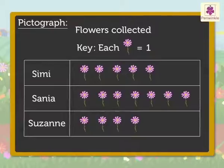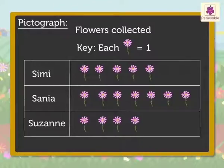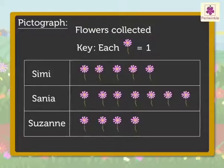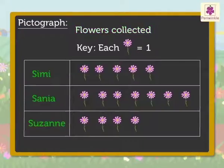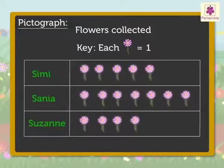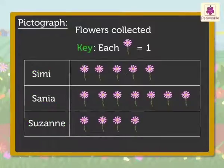Now, let's see how we can read this PICTOGRAPH of the flower farm example. The title, Flowers Collected, tells us the PICTOGRAPH is about the number of flowers collected. The labels give us the information of who collected the flowers. The key tells us that each flower picture is equal to 1 flower.